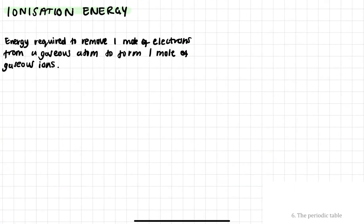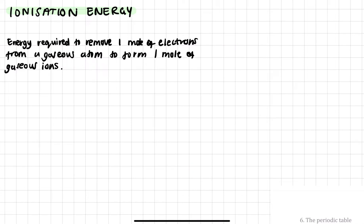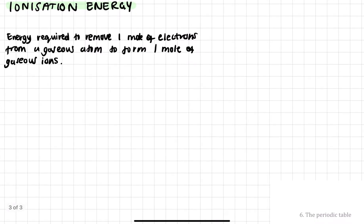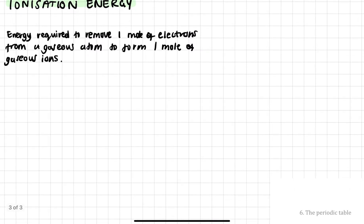Today we're going to be looking at ionization energy. Ionization energy falls under the unit AEPT and under periodic trends. It's really important to understand, especially because it tells us a lot about the reactivity of certain elements and also tells us how strong the bonds are that are formed between certain atoms and within compounds. Ionization energy is the energy required to remove one mole of electrons from one mole of gaseous atoms to form one mole of gaseous ions. It's really important to note that it is gaseous, that it is one mole, and that you're removing electrons.